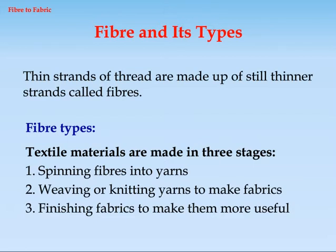Textile materials are made in three stages: 1. Spinning fibers into yarns. 2. Weaving or knitting yarns to make fabrics. 3. Finishing fabrics to make them more useful.